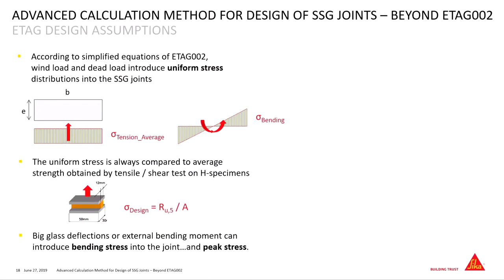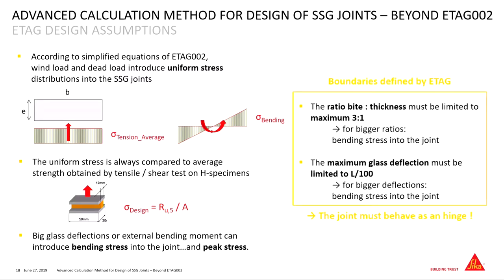Bending — or reasons for it — could be, of course, big glass deflections, for example, and secondly external bending moments due to special designs of frame or adapter frames and something like this. Boundaries are defined — like span/321 or L/100 as a maximum glass deflection — but the idea is that the joint itself must act more and more like a hinge, and therefore we have to adapt our design approach as well.